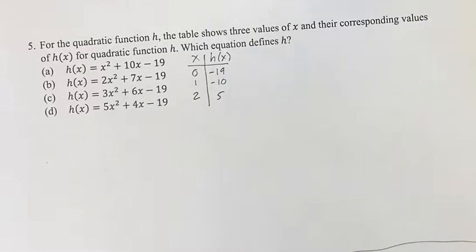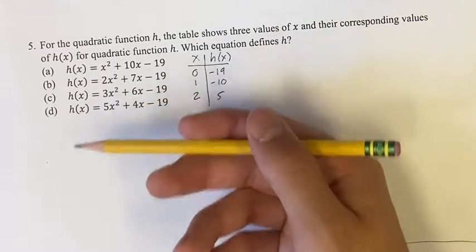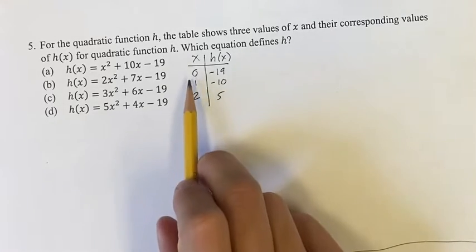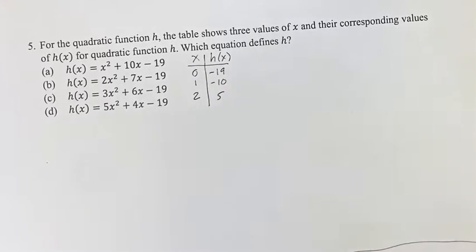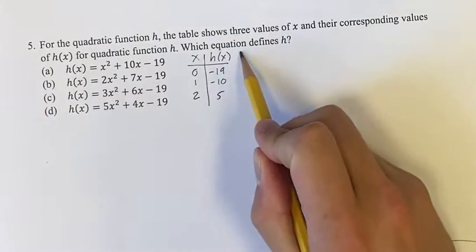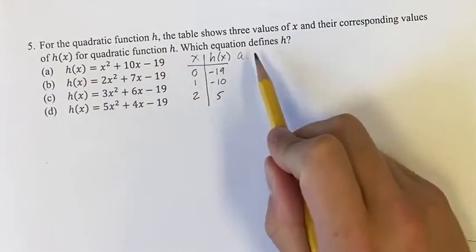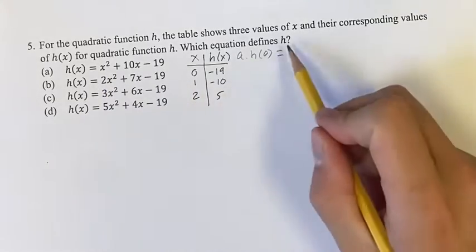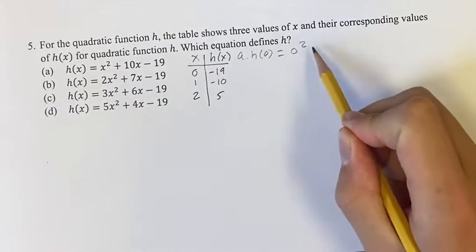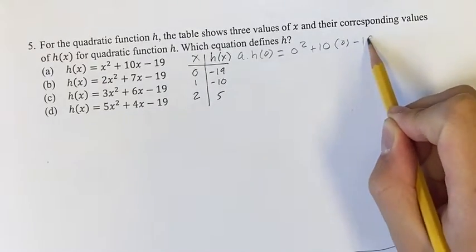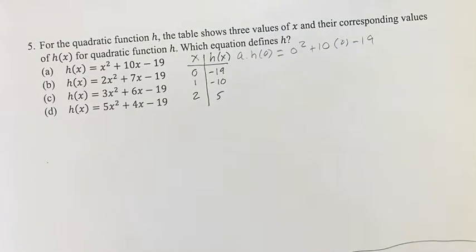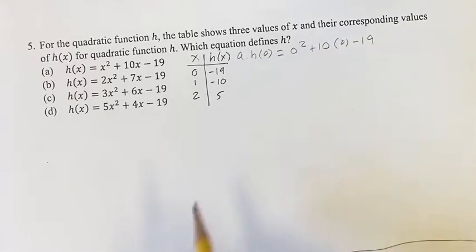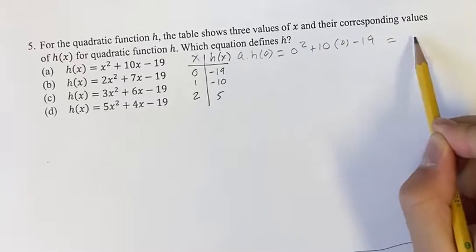The easiest way to do this is just plug in these values into these equations until only one works for all three. So we're going to start with h(0) equals -19. For option a, h(0), plugging in 0 for x wherever we see it, would equal 0² + 10(0) - 19. This means for h(0), the x² term and the x term go away, and we're just left with -19.